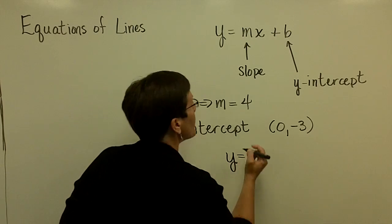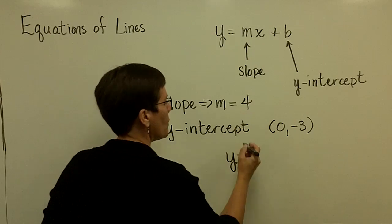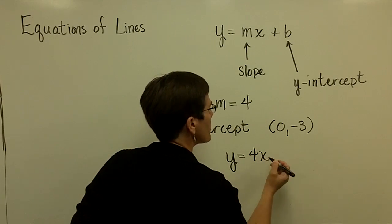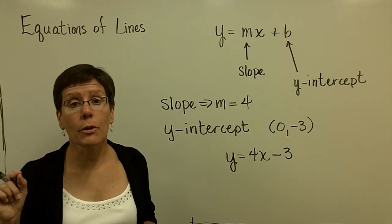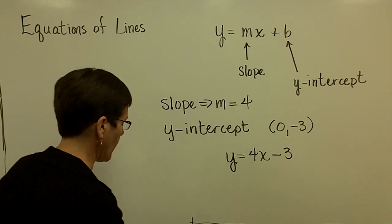and tell me that the equation with this slope would be y equals 4x, and this y-intercept would be minus 3, and you've written an equation with that data.